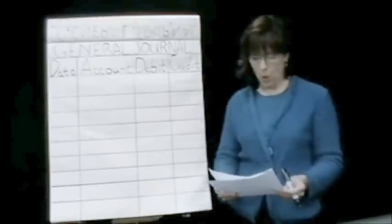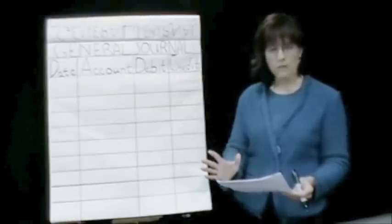Up here I have a general journal. On May 1st it says the ABC company issued for cash 50,000 shares of $10 par common stock for $20. What journal entry is needed to record this transaction? We have two numbers in here — one for par value, and then it says we issued it for $20.